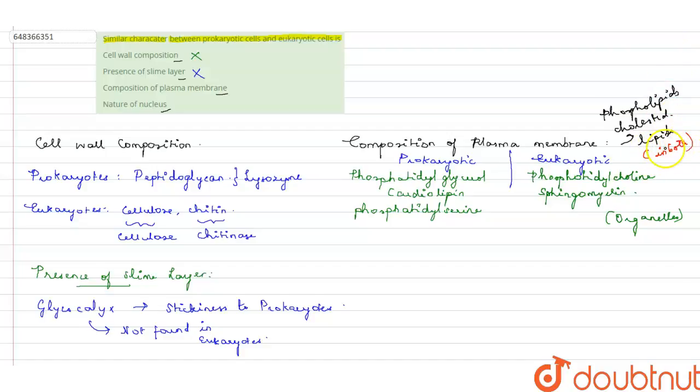But if you see in a very specific point of view, they are extremely different. Because prokaryotic plasma membrane does many functions which cannot be done within the cell, as it lacks membrane-bound organelles. Therefore, the prokaryotic membranes mimic the function of the membrane-bound organelles.